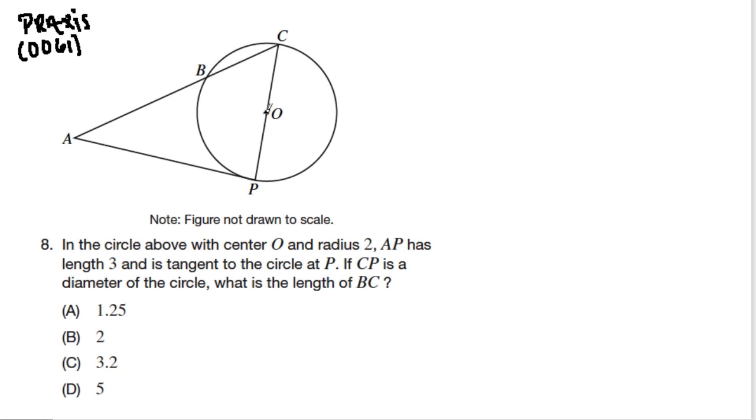First of all, we have a circle with center O and a radius of 2. This is our center O, and here's our radii OP and CO. They're both equal to a length of 2. So I'll label that 2 and 2. And AP has a length of 3. So from A to P over here, the length is 3. And it's tangent to the circle at P.